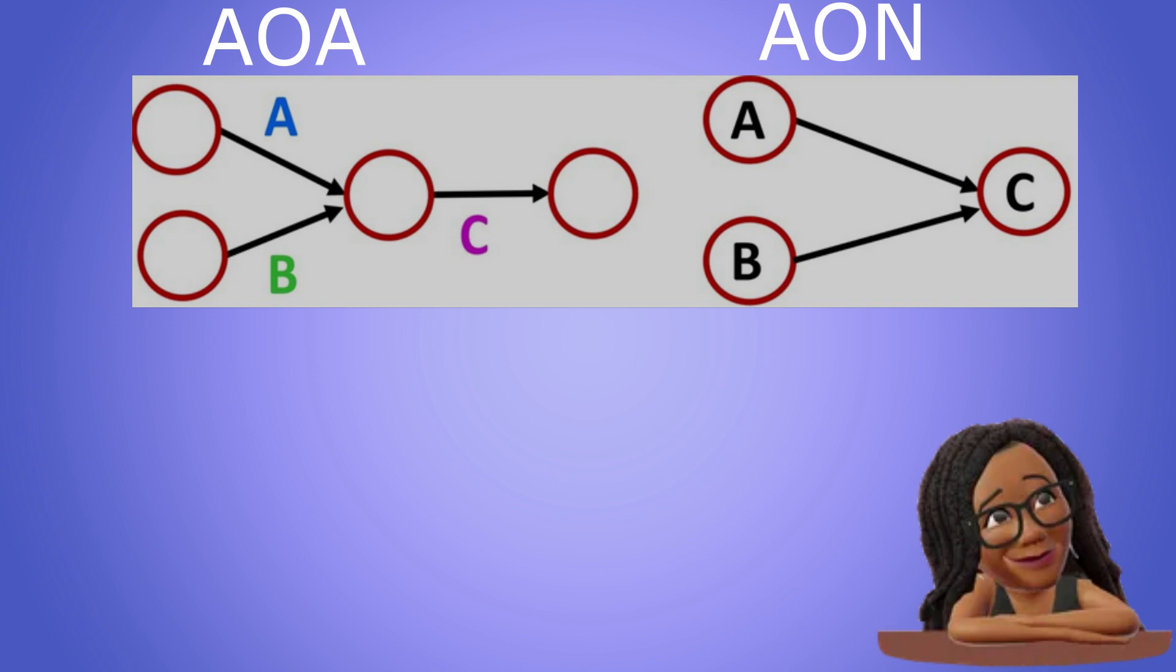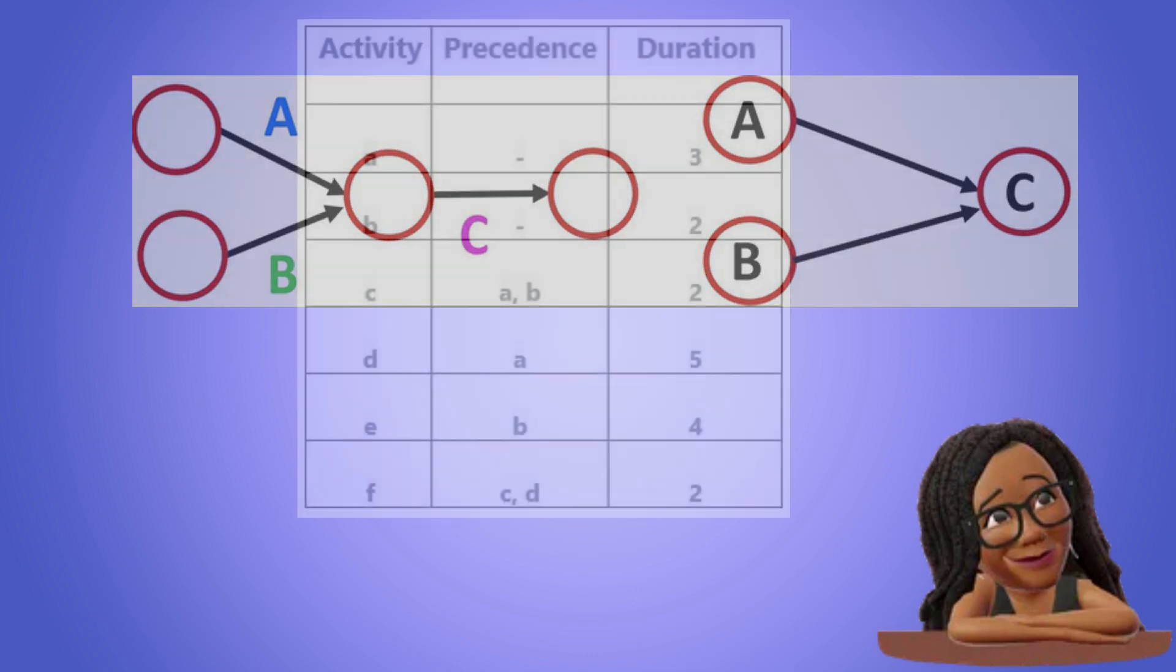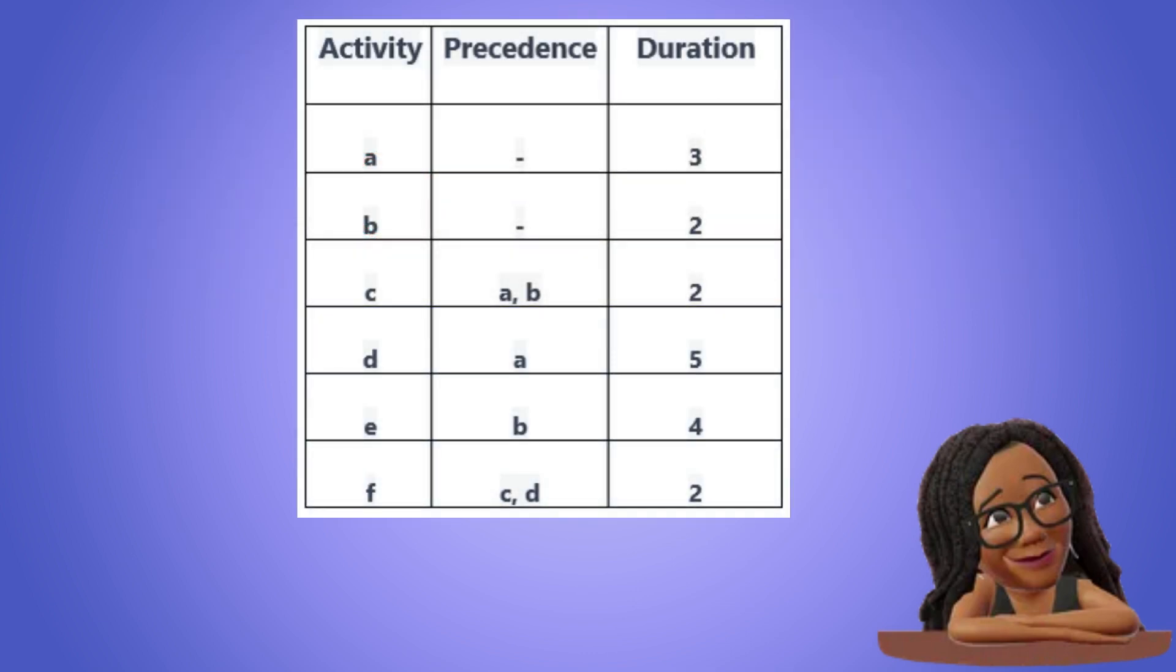Now let's complete an example where we create both network types from scratch and voila here is our network diagram table. This table tells us the activities, the precedence or in other words the activities that must be completed before the specified activity can start and the duration or how long the activity takes.